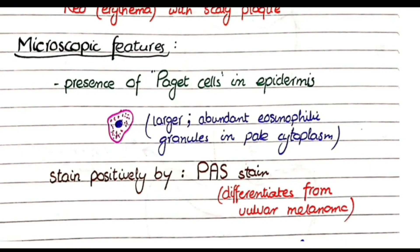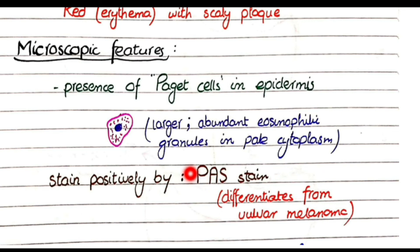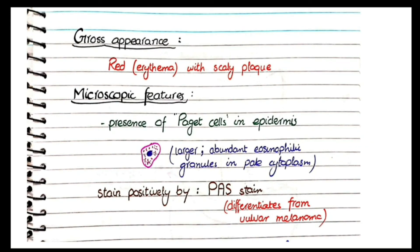Because Paget's disease of the vulva develops in the epidermis, it can create confusion with vulvar melanoma, as both Paget's cells and melanoma cells appear as granular structures. To differentiate between them: Paget's cells stain positively with PAS stain, while vulvar melanoma cells do not stain positively with PAS. This is an important differentiating feature.